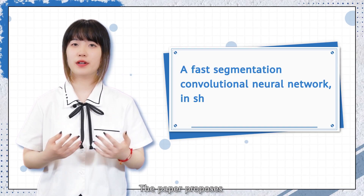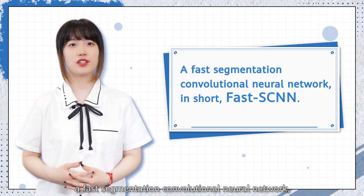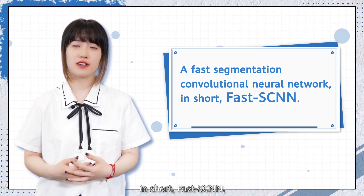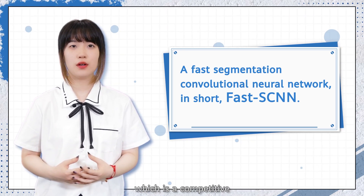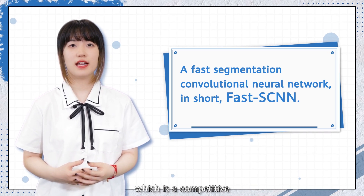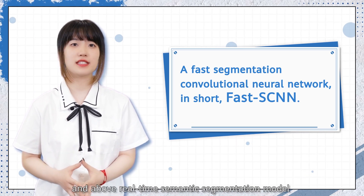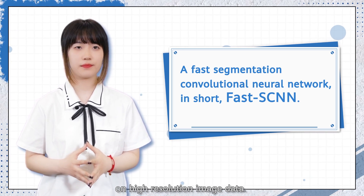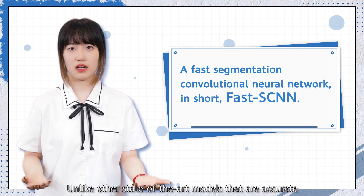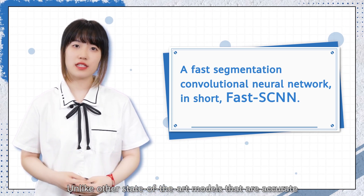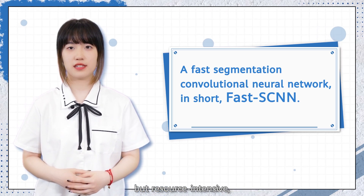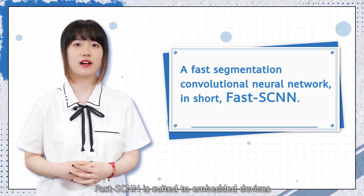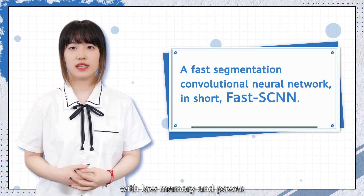The paper proposes a fast segmentation convolutional neural network, in short, FAST-SCNN, which is a competitive and above-real-time semantic segmentation model on high-resolution image data. Unlike other state-of-the-art models that are accurate but resource-intensive, FAST-SCNN is suited to embedded devices with low memory and power.